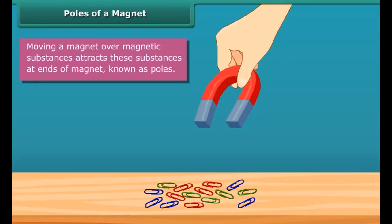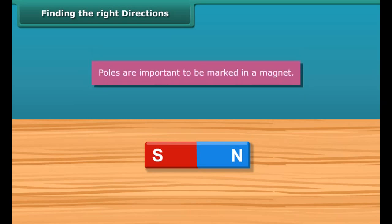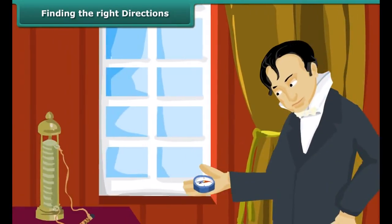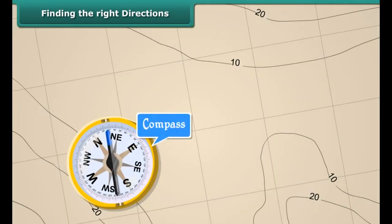Materials that are not attracted by magnets are called non-magnetic materials. For example, wool, cloth, and bricks are non-magnetic materials. Self-assessment: drag the magnetic and non-magnetic materials in the respective boxes.